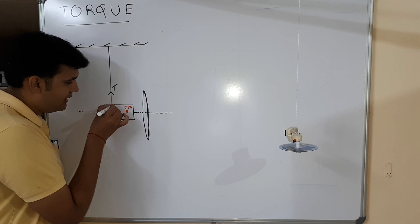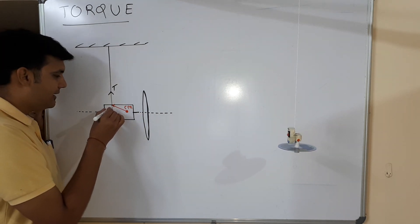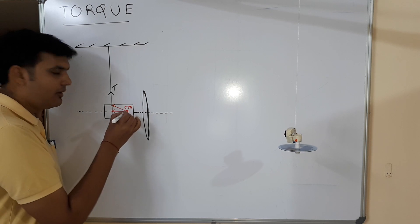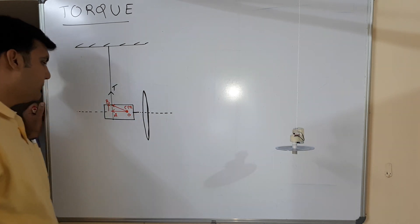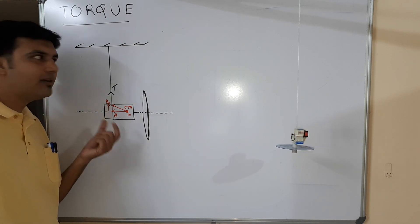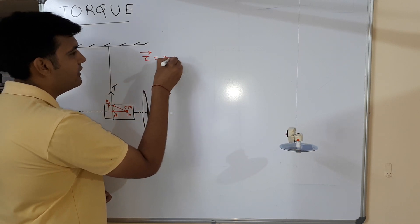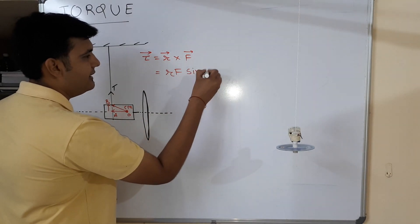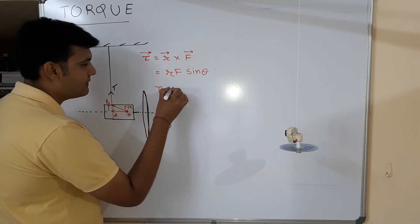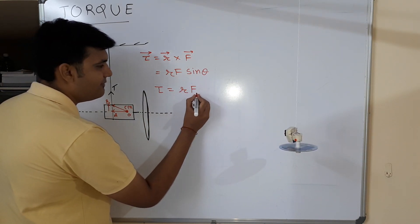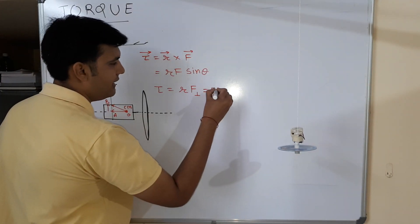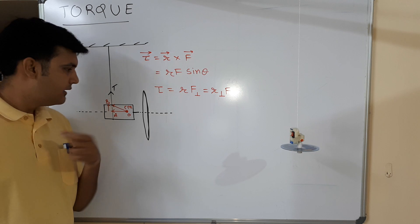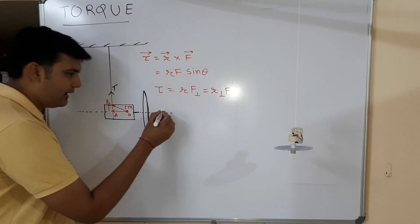Along this joining point I can mark this as my r vector, and two components will be there — one component along OA and another perpendicular component OB. Now from basics we know torque equals r cross F, and that is nothing but r·F·sin θ. In this case you can write this as r times the perpendicular component of F, which is more or less the same as far as this situation is concerned.